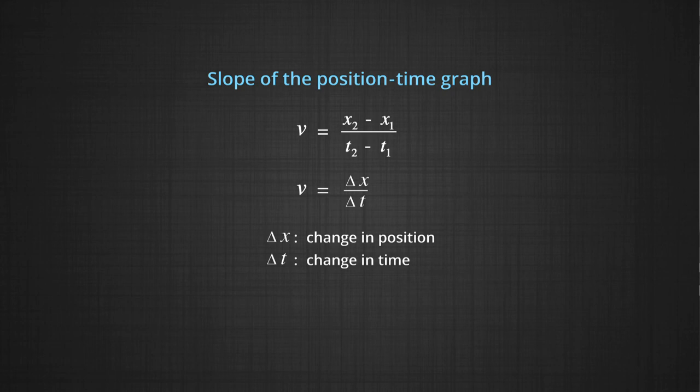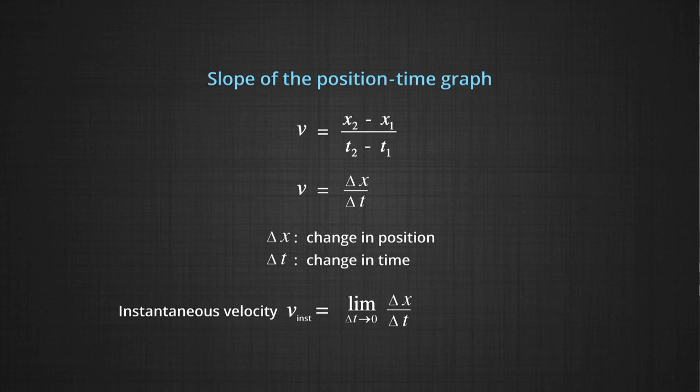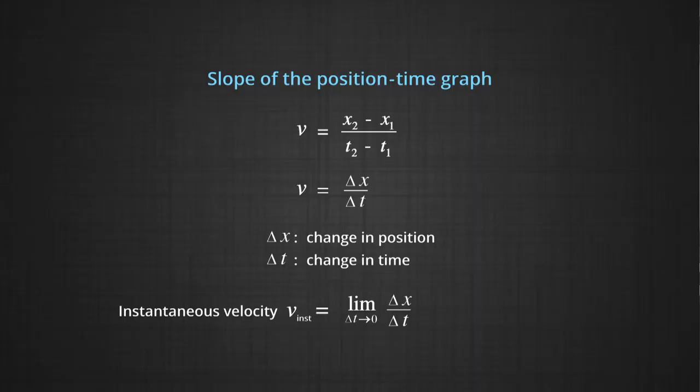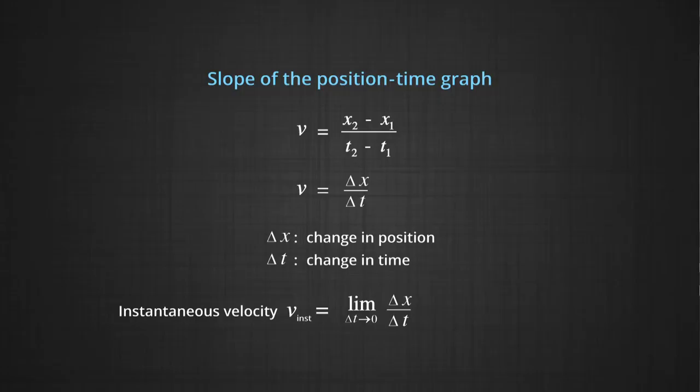For a continuously changing position, instantaneous velocity is defined as the limit of Δx/Δt as Δt tends toward 0. Note that Δt tending toward 0 does not mean the velocity becomes 0, because Δx may have any value in that short interval. We take the time interval small because we want to consider velocity at a single instant.